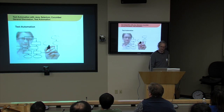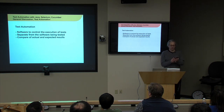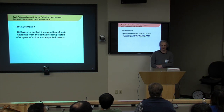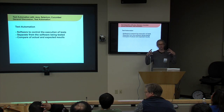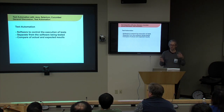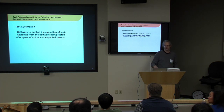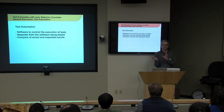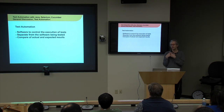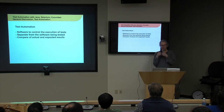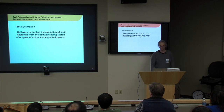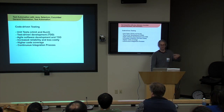Test automation is basically a framework to control your tests. There are different kinds of software automation. You're typically separating that software from the actual production software. One of the failures sometimes of automation is you don't give the same design mentality or process to developing that software as you would production software.